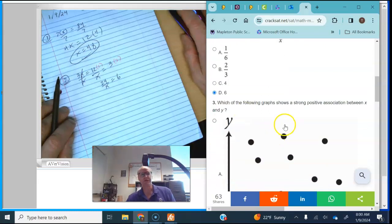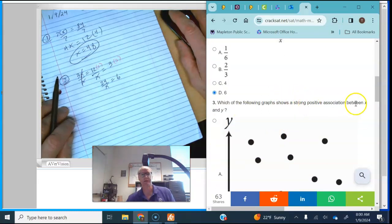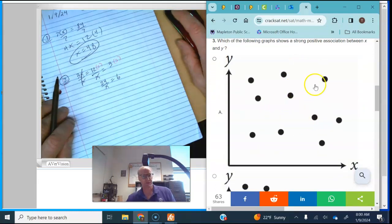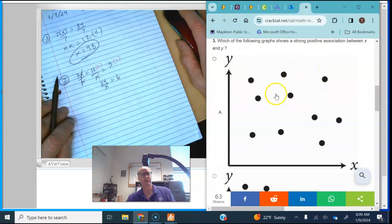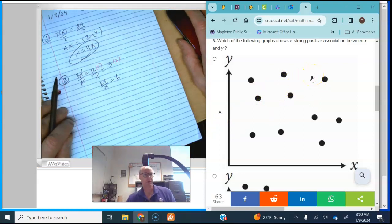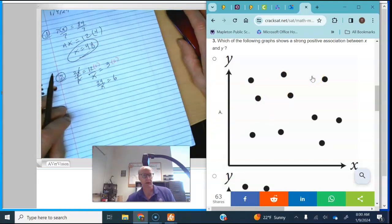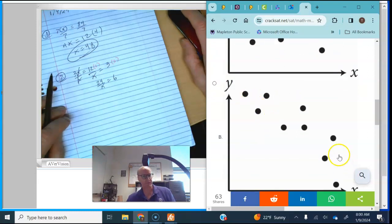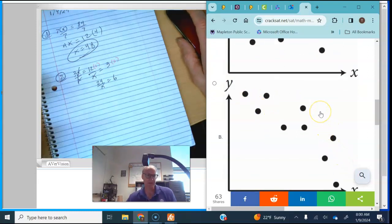Number three, which of the following shows a strong positive association between x and y. There doesn't appear to be any association at all here. A positive association would be a positive slope and the points would be more or less in a line. So we're looking for maybe a linear association.